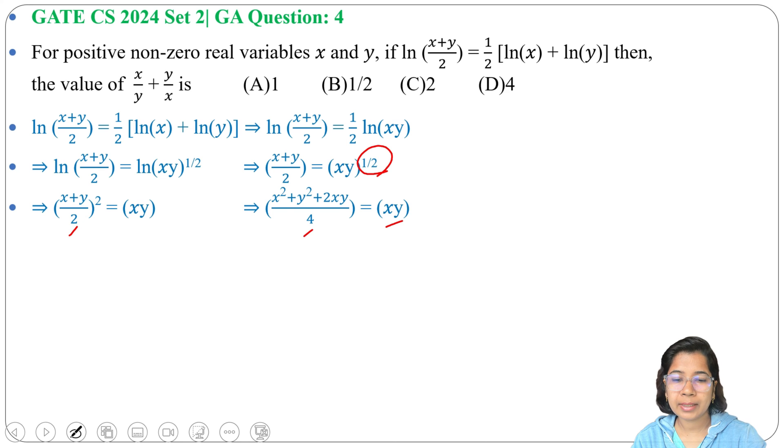Now simplify. Multiply by 4: x^2 + y^2 + 2xy = 4xy. Move 2xy to the right: 4xy - 2xy = 2xy. So we get x^2 + y^2 = 2xy.